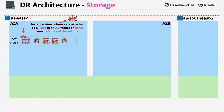There are multiple different ways that failures can impact instance store volumes. Hardware failure can impact it, the failure of an EC2 host can impact it, and the failure of an availability zone which that host runs in can also cause failure. There's no way of preventing this, which is why instance store is always viewed as temporary and unreliable storage.